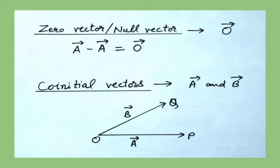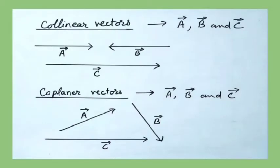Co-initial vectors: two vectors having a common or same initial point are called co-initial vectors. Here you can see A and B have the same initial point O. Co-linear vectors: vectors having directions same or opposite, either along the same line or along parallel lines, are called co-linear vectors. Co-planar vectors: vectors in the same plane are known as co-planar vectors.